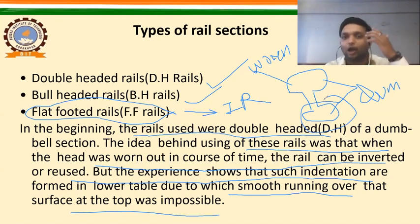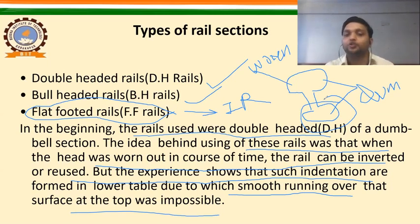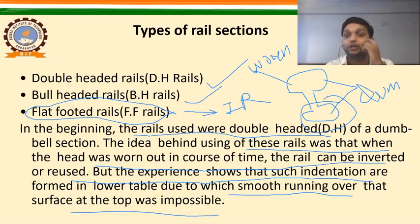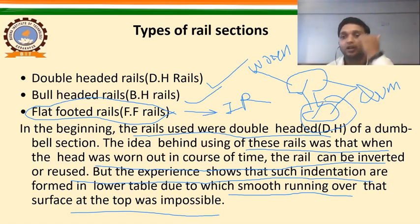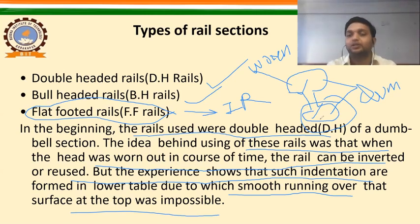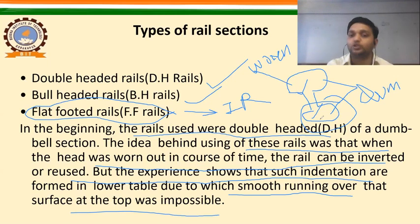The double-headed rail practice became obsolete because indentations were formed in the lower table, making smooth running impossible. Looking at the different sections: the DH rail resembles a dumbbell shape with the upper table and lower table. In the bull headed rail, you can see that the head part is more than the foot — the foot is 64mm but the head is larger. In the flat footed rail, the head part is 66.68mm but the foot part is 136.53mm and the entire depth is 142.88mm.